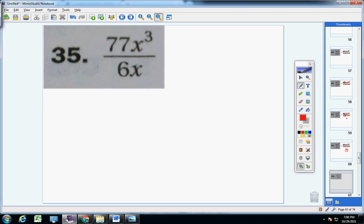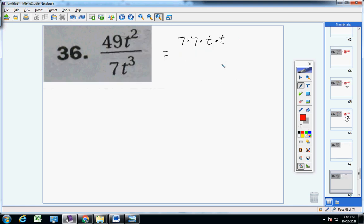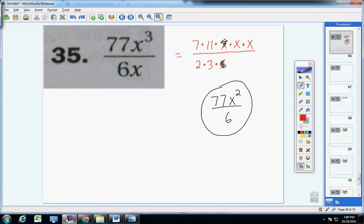Number 35. The prime factors of 77 would just be seven and 11. You have three X's: X, X, X. Prime factors of six would be three and two, and you have one X. Now look, Emma, nothing cancels with your numbers. Nothing. And that's fine. Your X's here cancel, and your X's here cancel.